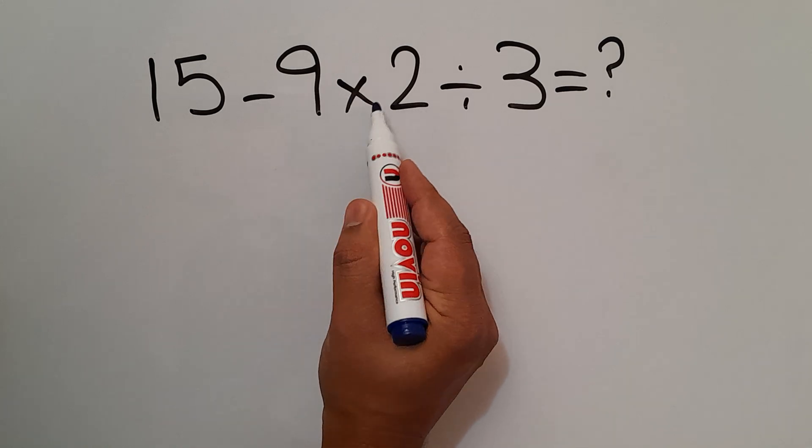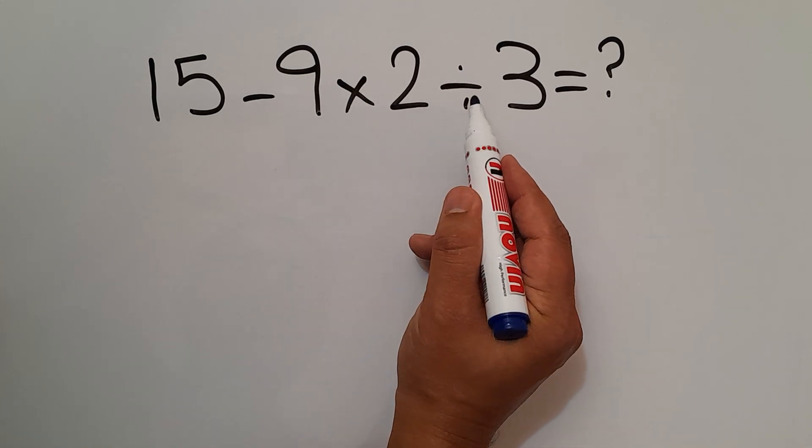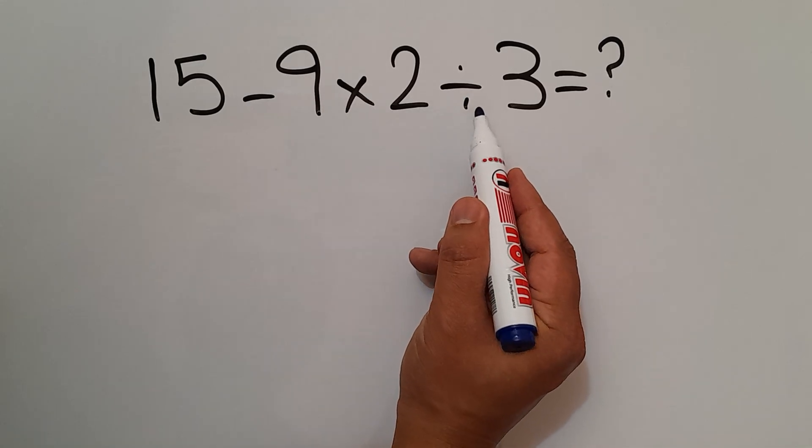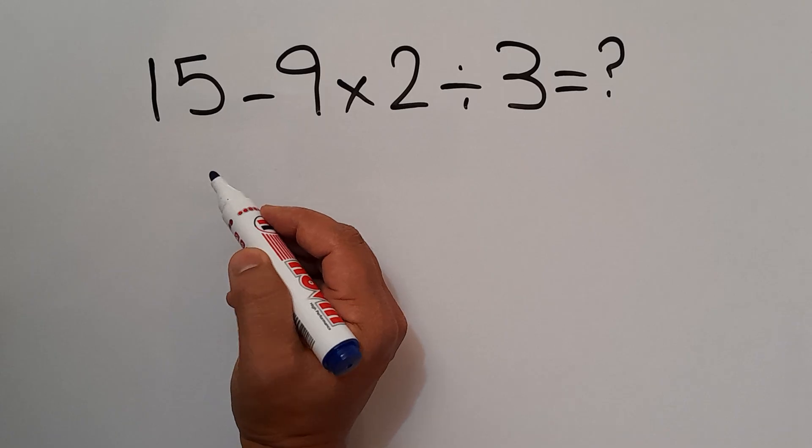So, first this multiplication, then this division, and finally this subtraction.